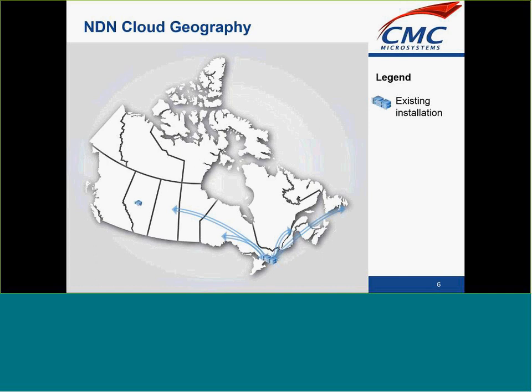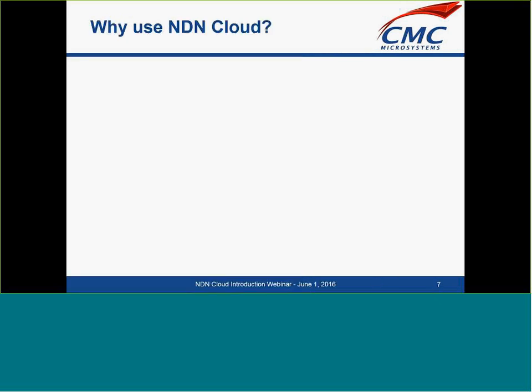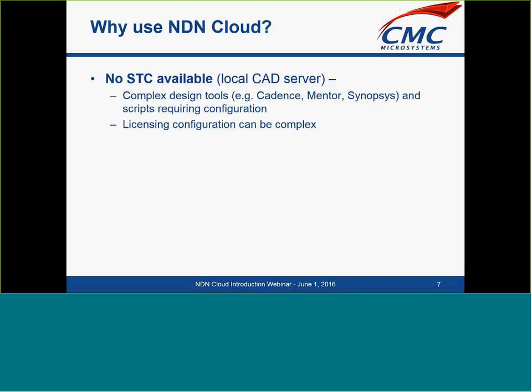The geography of the environment: the existing installation is here in Kingston, Ontario. There's also a server indicated in Alberta — that's for licensing. The main cloud infrastructure is in Kingston. In our projects roadmap, we're going to be adding bigger infrastructure elsewhere in Ontario and as well as in BC.